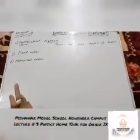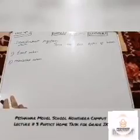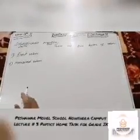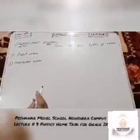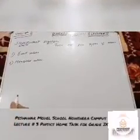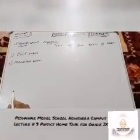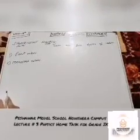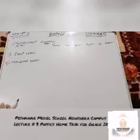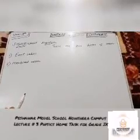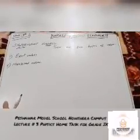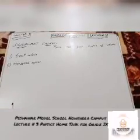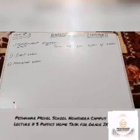Bismillahirrahmanirrahim and Assalamu Alaykum students. Today's lecture is for class ninth, unit number one, lecture number three, Physics. Today's topic is significant figures. Basically there are two types of values: number one, exact value, and number two, measured value. To understand the clear idea about significant figures, we first need to understand exact values and measured values.